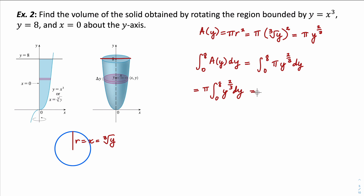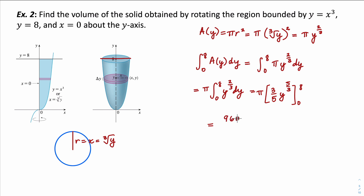Taking the antiderivative: adding one to the exponent gives 5/3, and dividing by the new power is the same as multiplying by the reciprocal, giving us (3/5)·y^(5/3). So we have π times (3/5)·y^(5/3) evaluated from 0 to 8. Zero gives us zero. Plugging in 8: the cube root of 8 is 2, two to the fifth is 32, and 32 times 3 is 96. So the volume is 96π/5 cubic units.